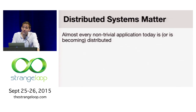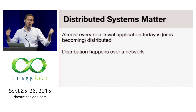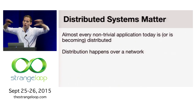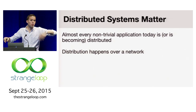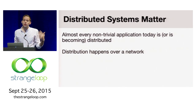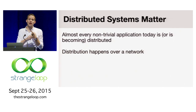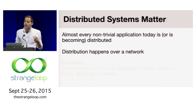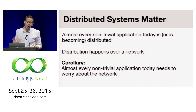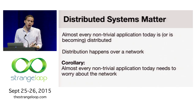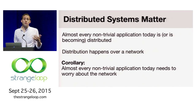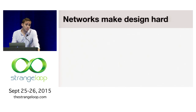What's the defining characteristic of distributed programs? They operate over a network. In order to actually exchange bits, there's some communication medium across which we're communicating that's more than just invoking a function call. Given that almost every application is becoming distributed and distribution happens over a network, almost every non-trivial application today needs to worry about what happens when we build systems that operate over the network. And it turns out that networks make designing programs very hard.